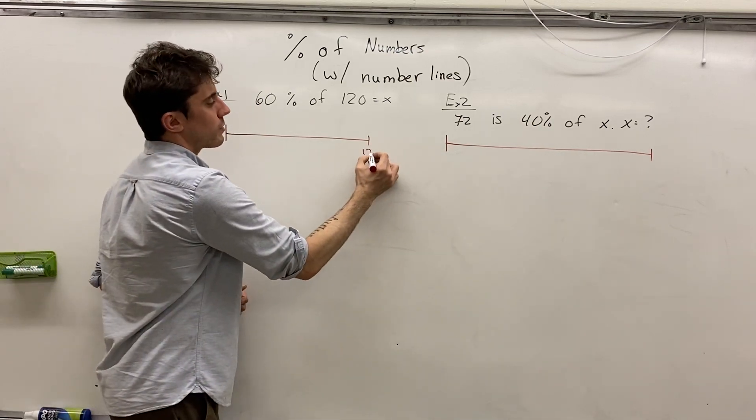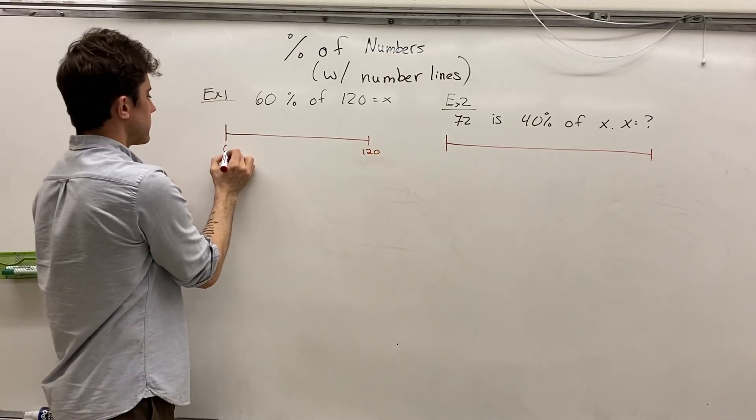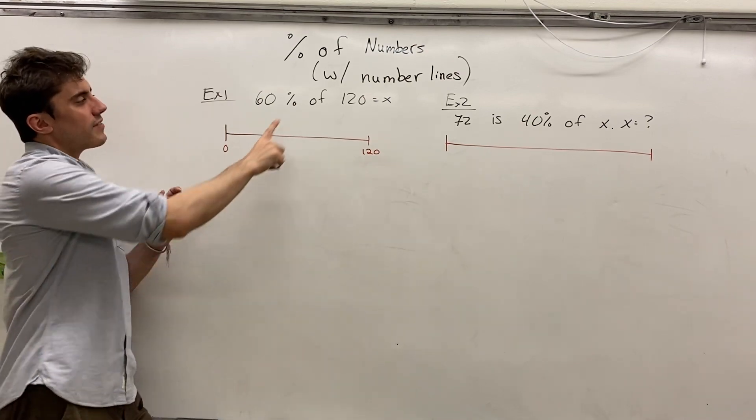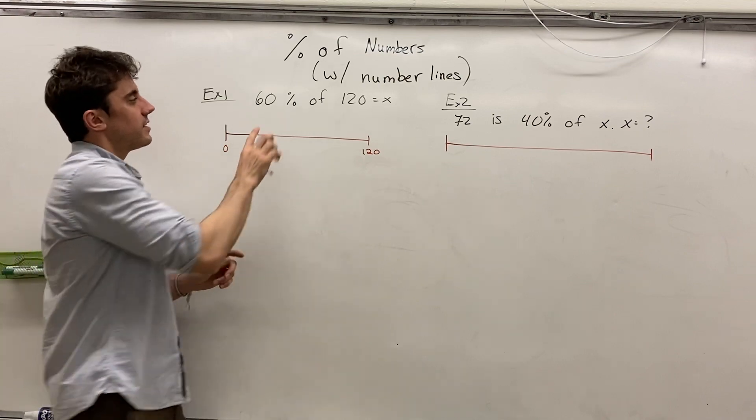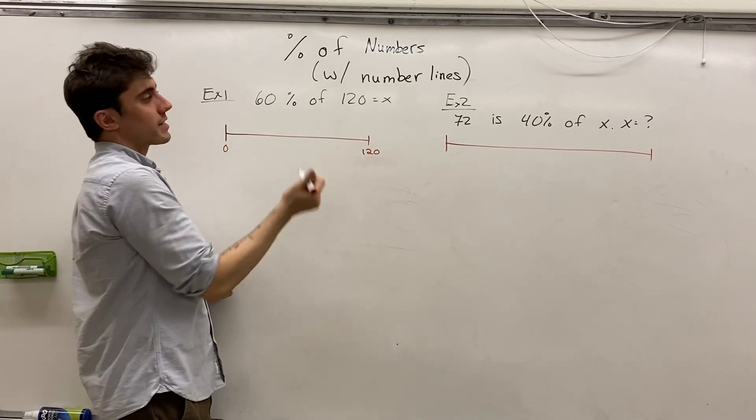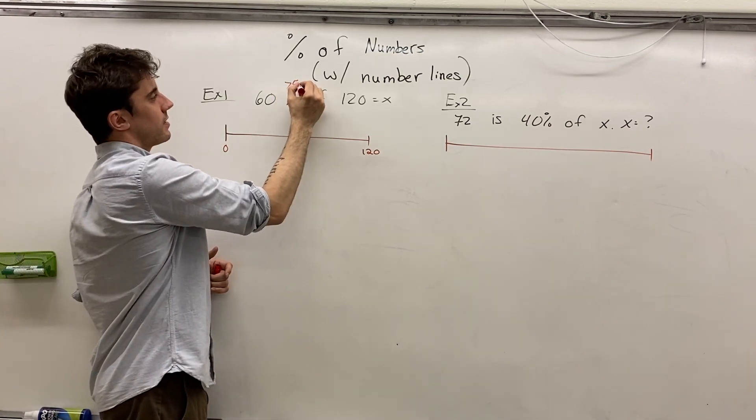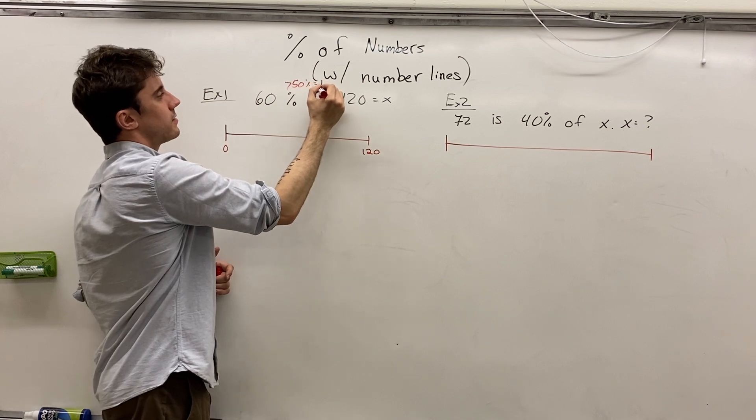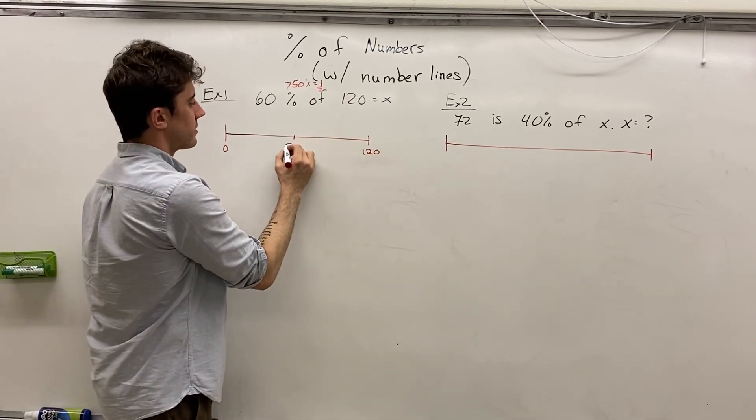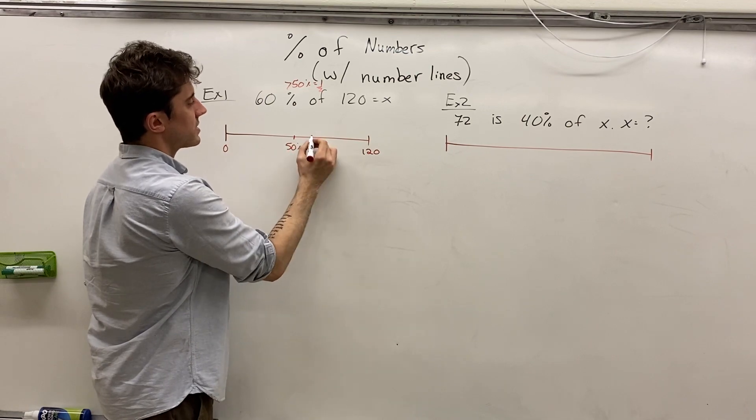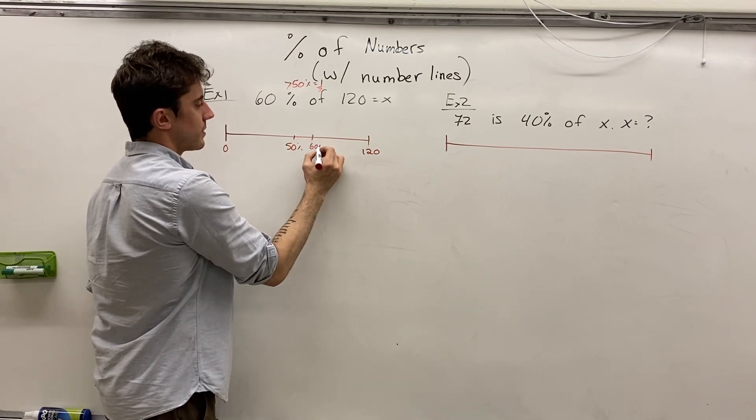So if we put 120 at the end of our number line, and of course 0 at the very beginning, we can estimate where the answer should lie, just roughly. 60% is greater than 50%, clearly, and 50% is one half. So we know that 50% is around here, and so 60% we can estimate to be around this part.